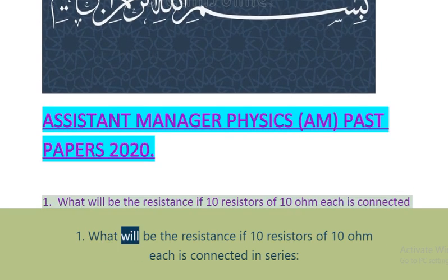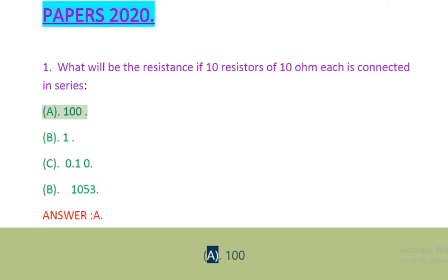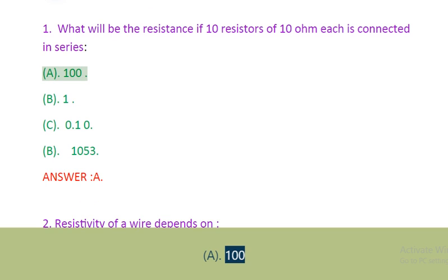Question 1: What will be the resistance if 10 resistors of 10 Ohm each is connected in series? A. 100. B. 1. C. 0.10. Answer: A.